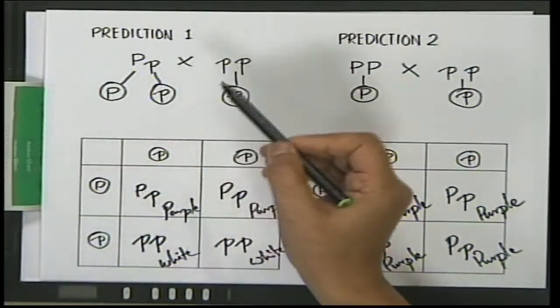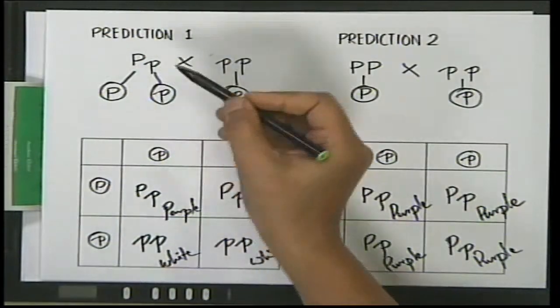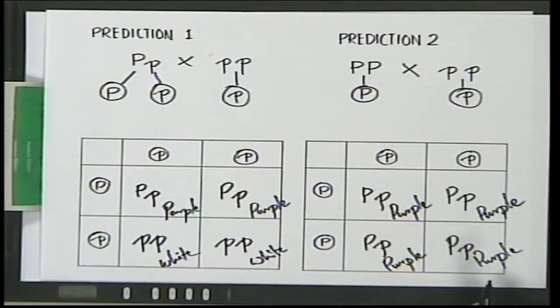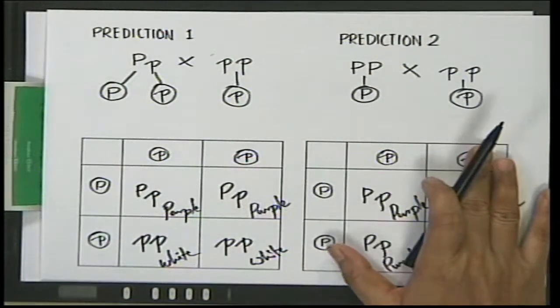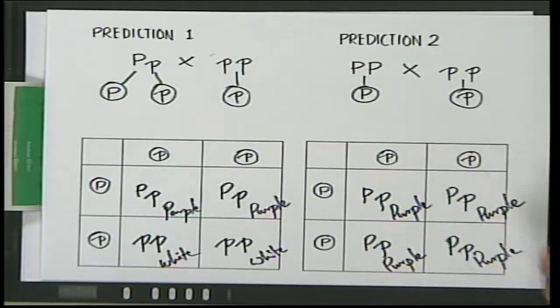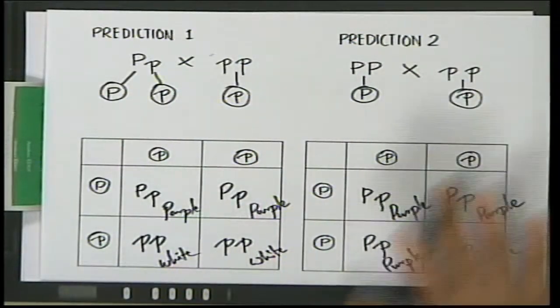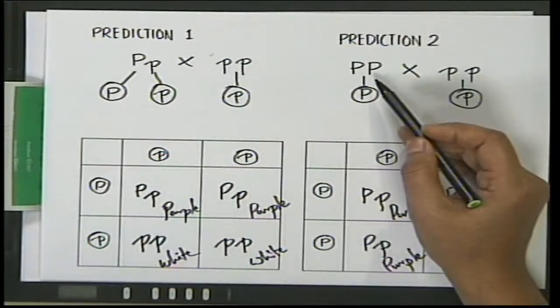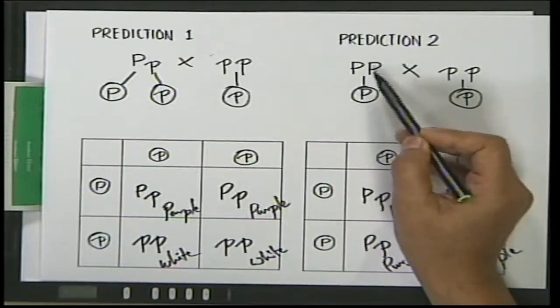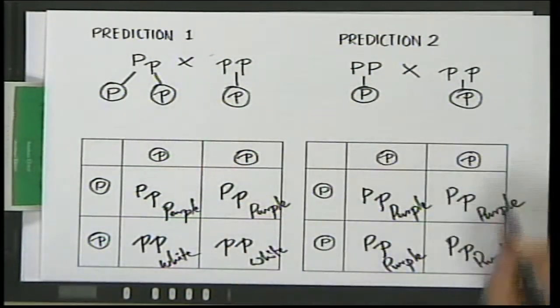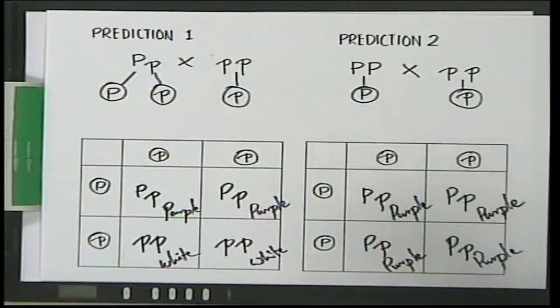So that is the importance of using a test cross: you can find out the genetic constitution of the unknown parent. Initially we only saw the flower was purple; we didn't know whether it was PP or Pp. But based on calculations and actually planting them, we can conclude what genetic constitution that plant had. And that is one of Mendel's experiments.